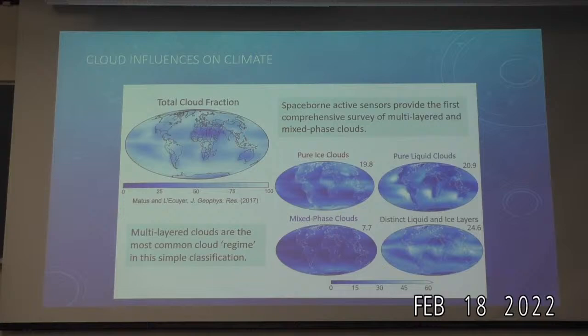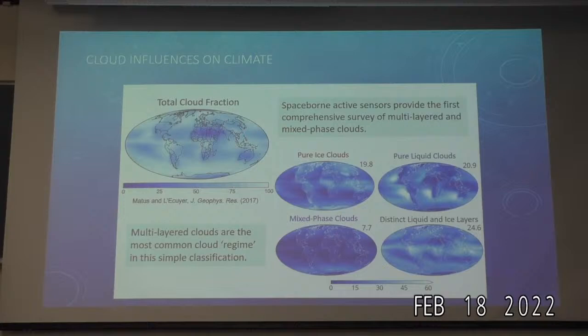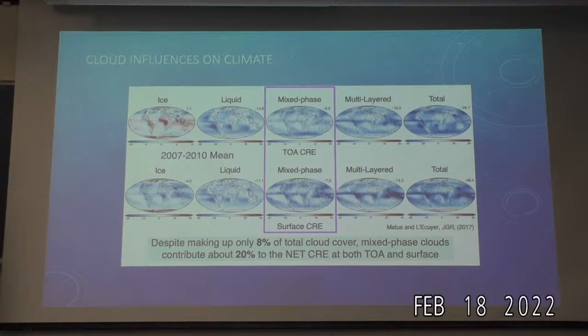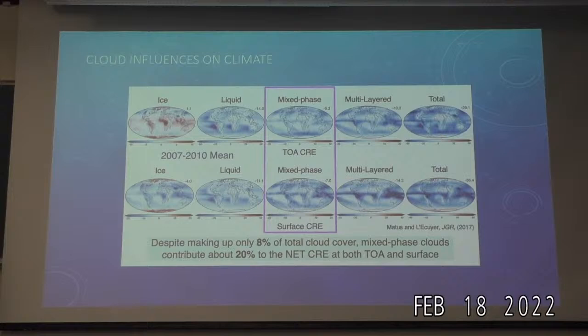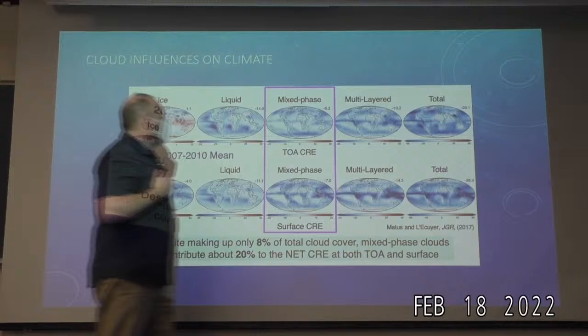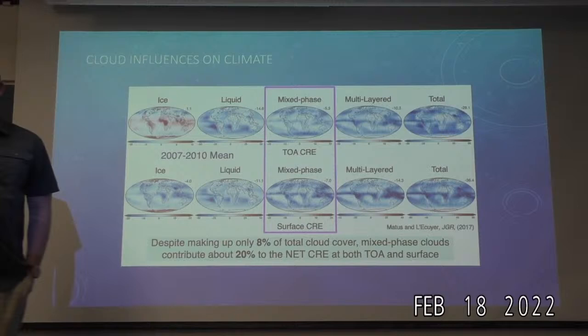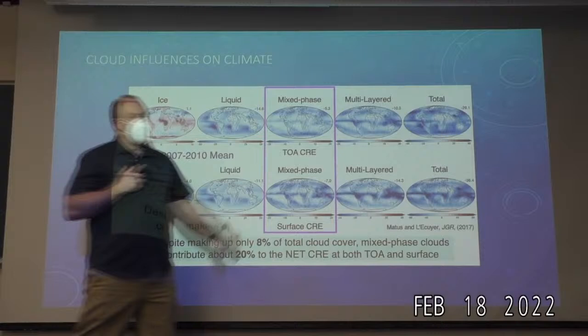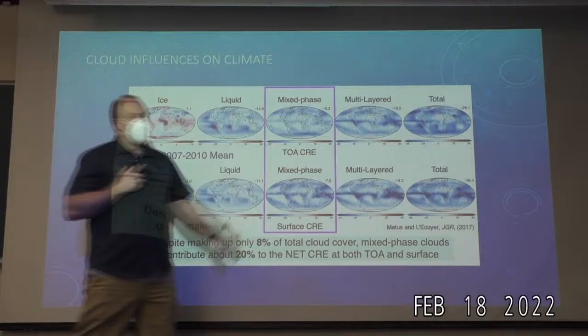Clouds with distinct liquid and ice layers account for about a quarter of clouds seen globally at any given time. We then estimated the impact of these clouds on the surface and top-of-atmosphere radiation balance. Mixed-phase clouds that make up about 8% of total cloud cover are actually responsible for about 20% of the net cloud radiative effect at both the top of the atmosphere and the surface.